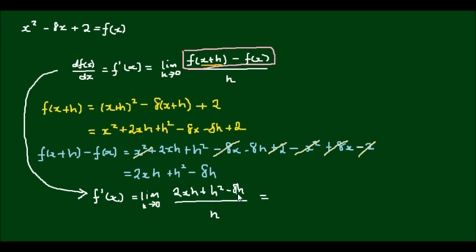I can now factor out an h and cancel it out with the h on the bottom. So that will leave me with the limit as h approaches 0 of 2x plus h minus 8, which is simply equal to 2x minus 8. So we found the derivative of x squared minus 8x plus 2 from first principles is 2x minus 8.